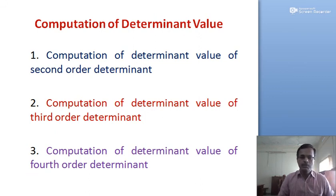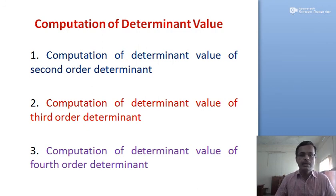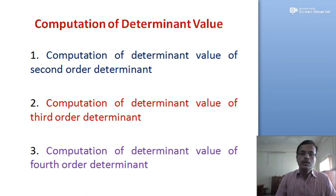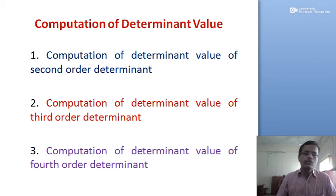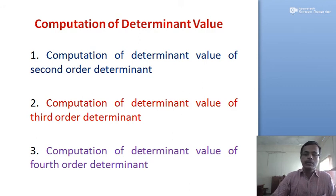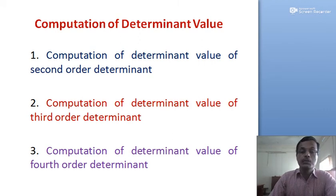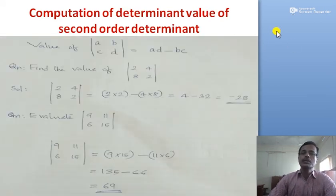When we apply the mathematical operation on the elements of a square matrix, we get a simplified value called the determinant value. We can compute determinant values for second order, third order, fourth order, fifth order, sixth order determinants, and so on.